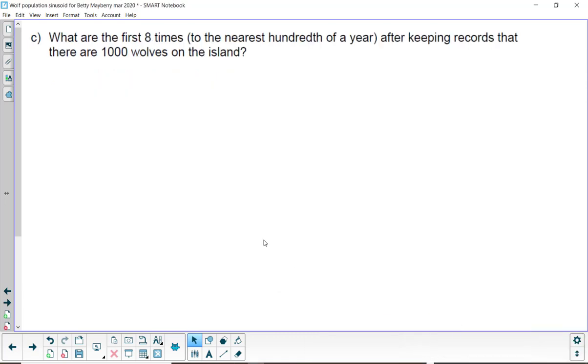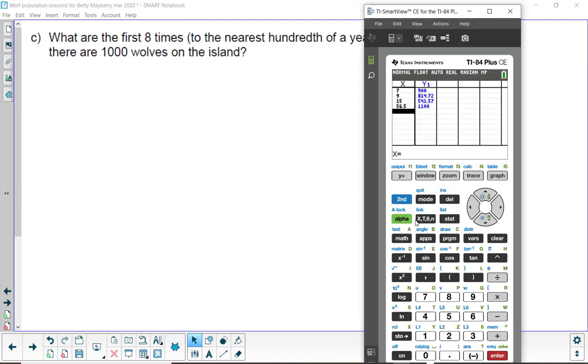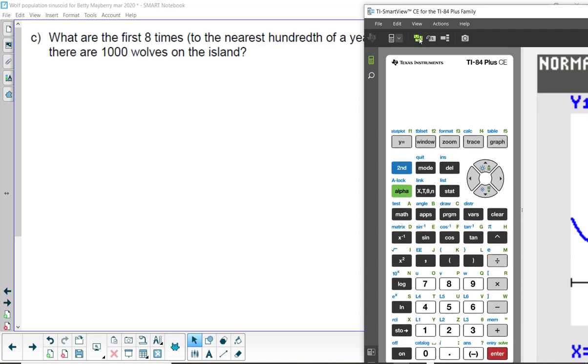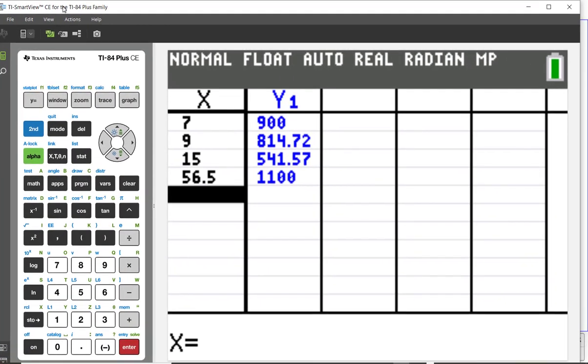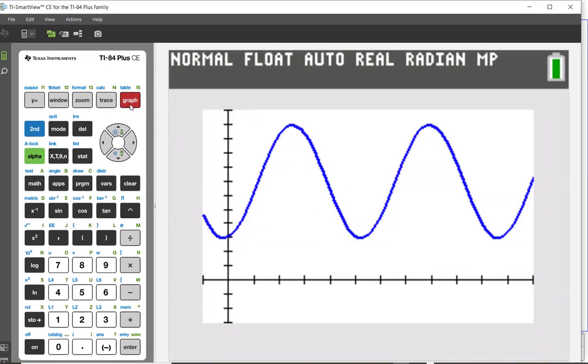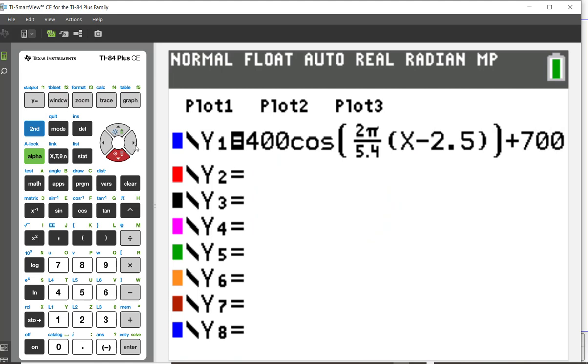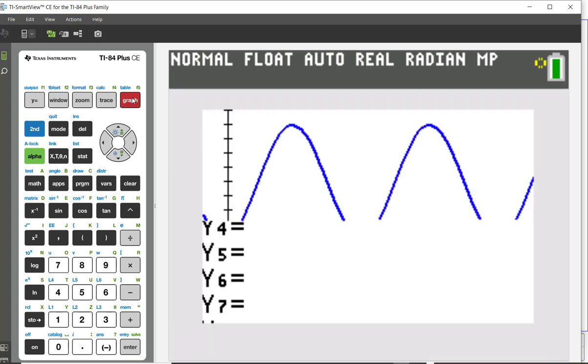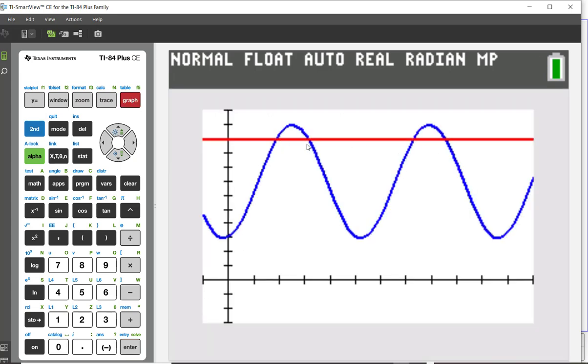And the last question, what are the first eight times to the nearest hundredth of a year after keeping records that there are a thousand wolves on the island? We could look at this graphically. Let me get the big screen here graphically. And I could go and say, I want to know when it's a thousand wolves. So, in Y2, I'm going to type in a thousand wolves. And graph that. And you can see that this graph intersects this in four places. So, I can find those four points of intersection. And then, if I wanted to, I could extend it out to get eight points of intersection.